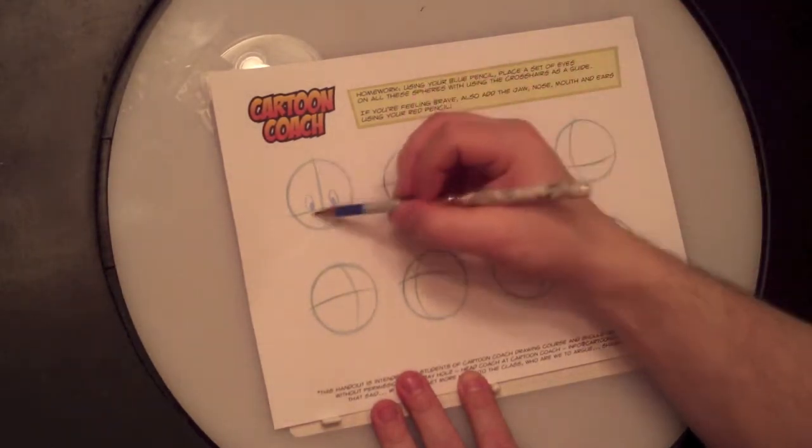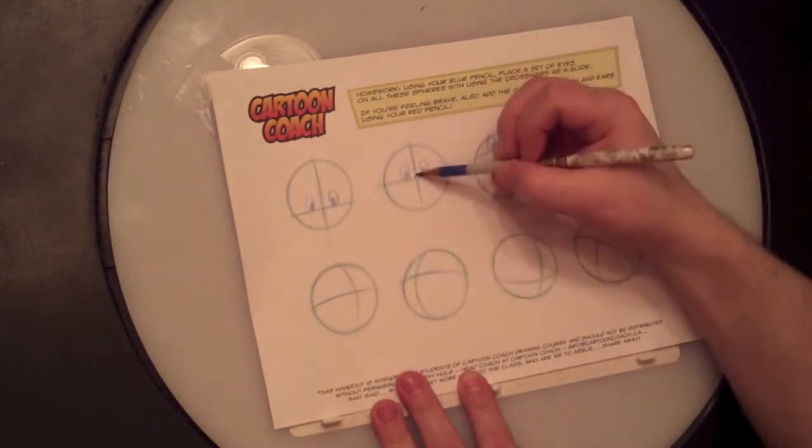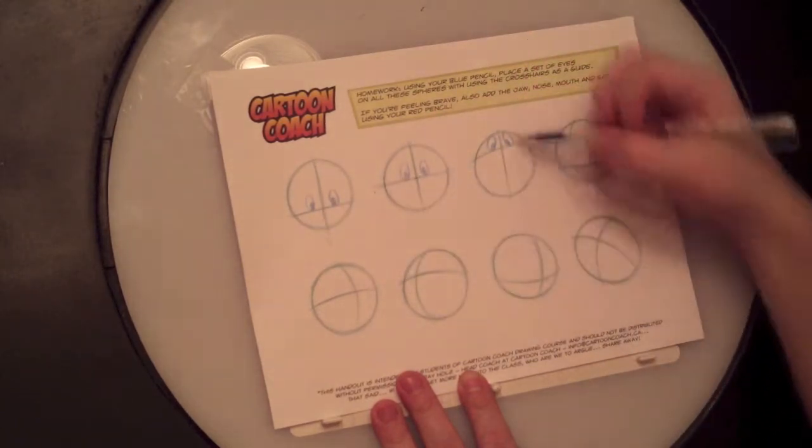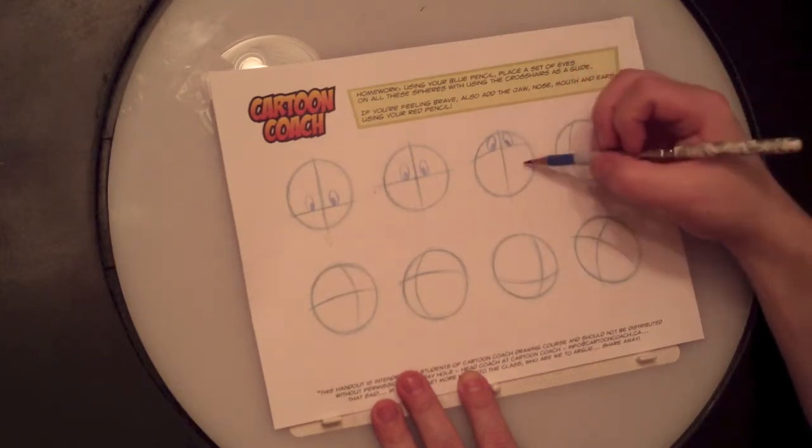Now as you can see this is a character whose eyes are looking maybe a little bit more down. This is a character looking more right at you, and this is a character who's maybe looking quite a bit up.